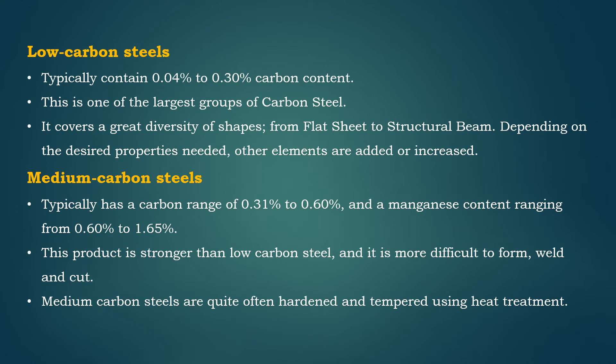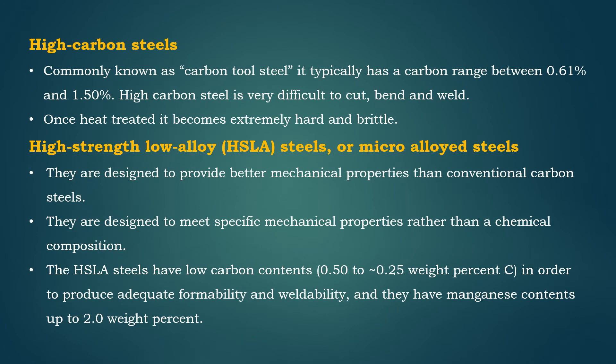Medium carbon steels are quite often hardened and tempered using heat treatment. High carbon steel, commonly known as carbon tool steel, typically has a carbon range between 0.61% and 1.5%. High carbon steel is very difficult to cut, bend, and weld. Once heat treated, it becomes extremely hard and brittle.